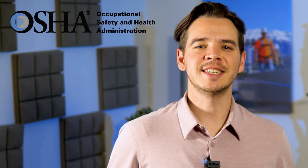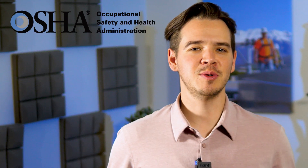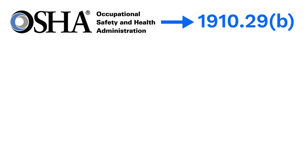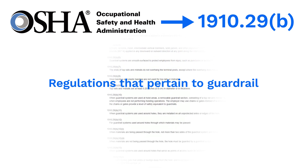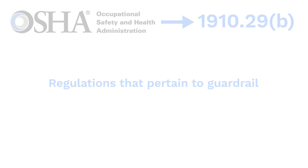OSHA 1910.29b is the portion of OSHA regulations that deals with requirements for guardrail that employees need to follow to make sure workers are protected.